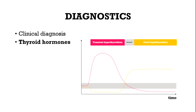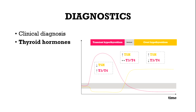In addition, thyroid hormones can be measured, which correspond to the three stages. In the transient hypothyroid stage, TSH is low and T3, T4 is high. In the subclinical hypothyroid stage, TSH is high and T3, T4 is normal. And in the overt hypothyroid stage, TSH is high and T3, T4 is low.